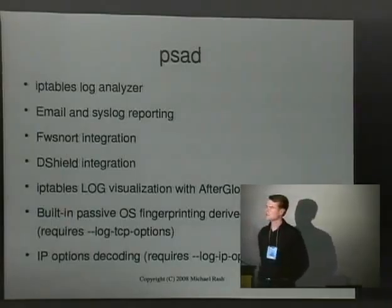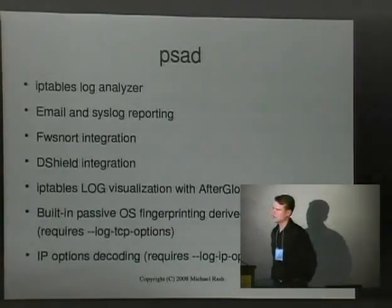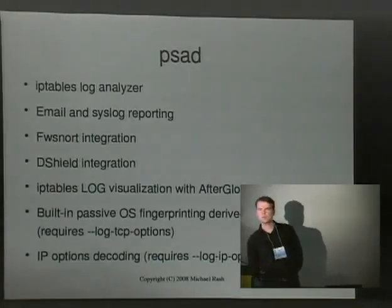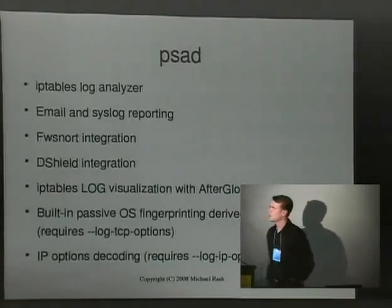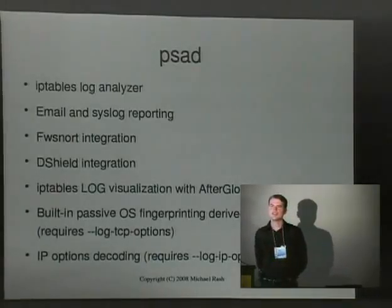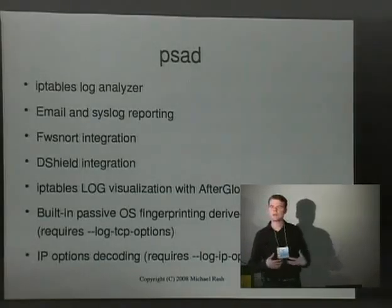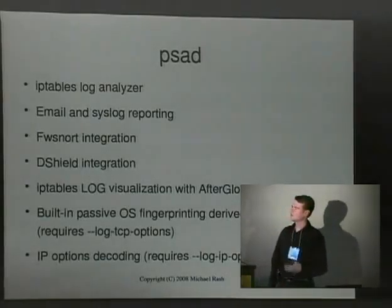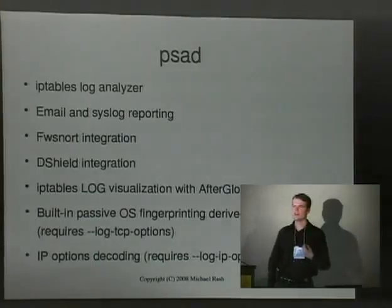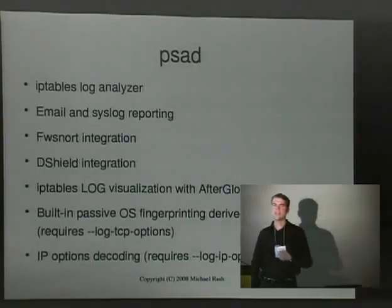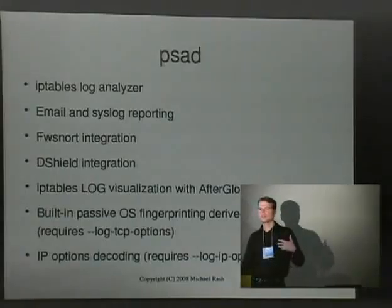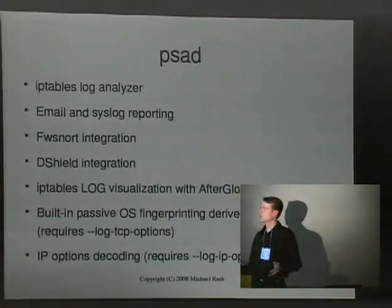DShield is a really interesting project — a distributed intrusion detection system. PSAD can send logs that come from FWSnort or from IP tables and send them off to DShield. It's a really nice global view, giving you data on IP addresses that are currently attacking various systems around the internet — people sending logs from their Checkpoint firewall or Cisco devices off to DShield where it analyzes for things like the latest attacks from malware.